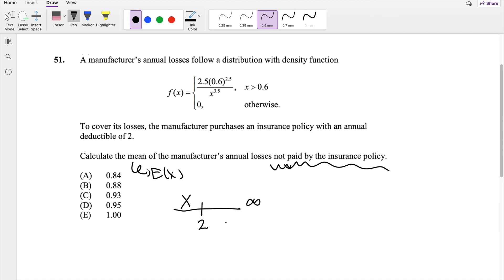And from 2 to infinity, the amount not paid by the insurance policy is just going to be 2. Because for us, as a consumer, the only amount we're paying is the deductible and the insurance company is paying whatever is over the deductible. So the expected value of not paid by the insurance policy after 2 is just going to be 2. So this question is asking, what is the expected amount the manufacturer pays out of pocket, basically?